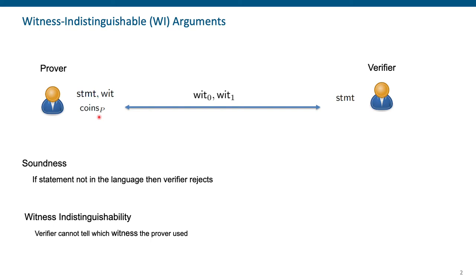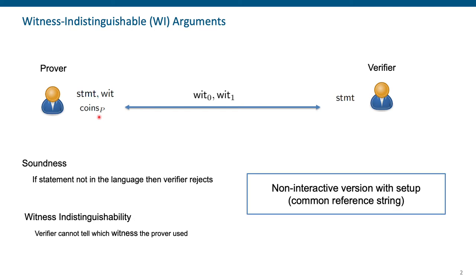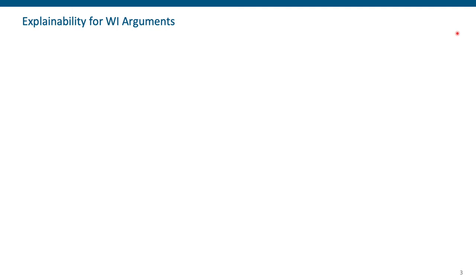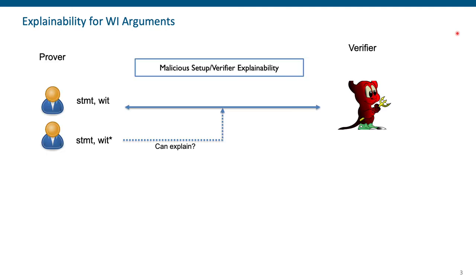In the security game for witness indistinguishability, we allow the verifier to choose the witnesses, and the prover generates a proof using one of them. There is also a non-interactive version of witness indistinguishable arguments, where we might have a setup algorithm that potentially outputs a common reference string.